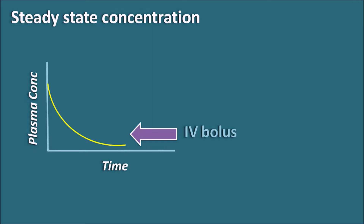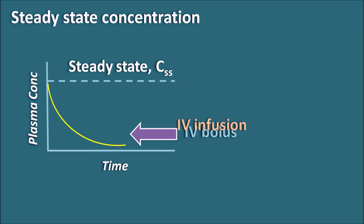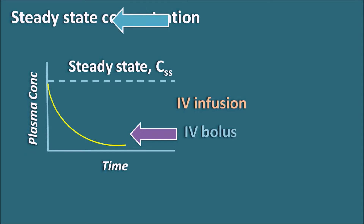We can give the IV bolus administration at the required steady state concentration, but the steady state is not maintained because of the elimination process. On the other hand, if we are giving the drug by IV infusion, when we give the drug by IV infusion we can observe a slow increase in the plasma concentration and after a certain time it achieves the steady state concentration.